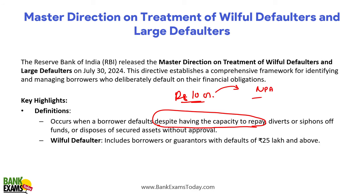Willful defaulters include borrowers and guarantors with a default of 25 lakh rupees and above. There are two conditions: first, the default must be 25 lakh rupees or more; and second, the borrower is not repaying the loan although he has the capacity to repay — he has assets to repay his loans but is not doing it.